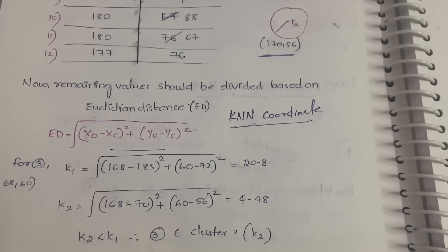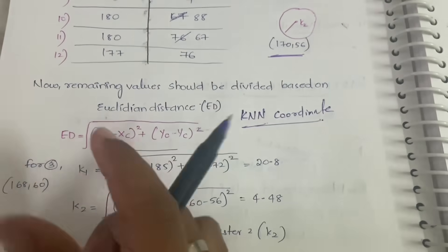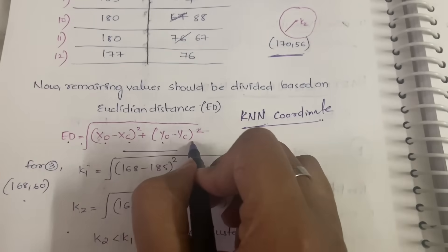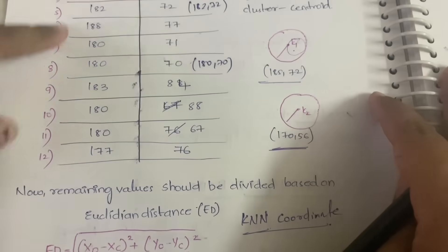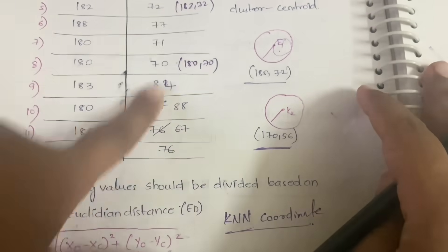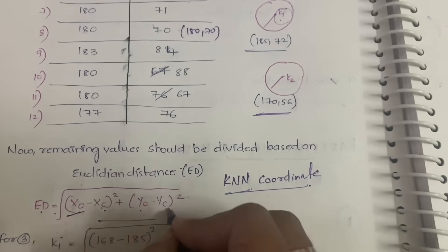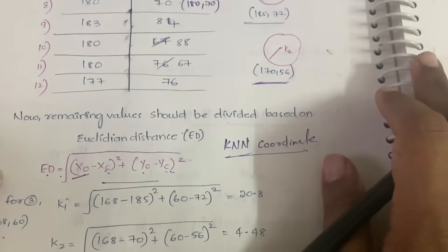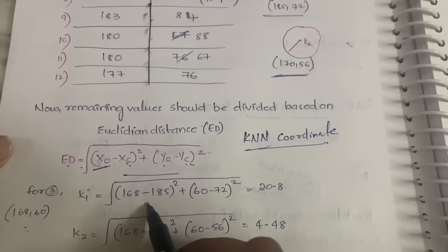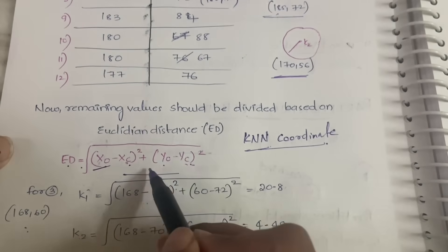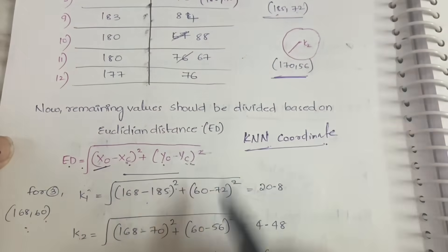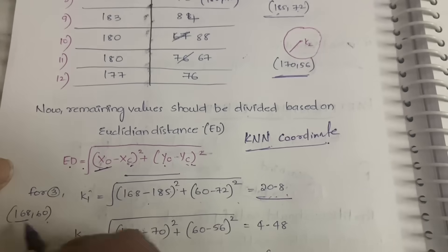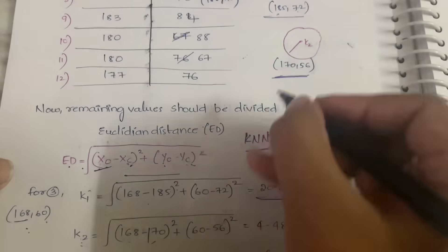The Euclidean distance formula is: ED = √((x0 − xc)² + (y0 − yc)²), where x0 and y0 are the data point values and xc and yc are the centroid values. For k1 (centroid 185, 72): ED = √((168−185)² + (60−72)²) = 20.8. For k2 (centroid 170, 56): ED = √((168−170)² + (60−56)²) = 4.48.